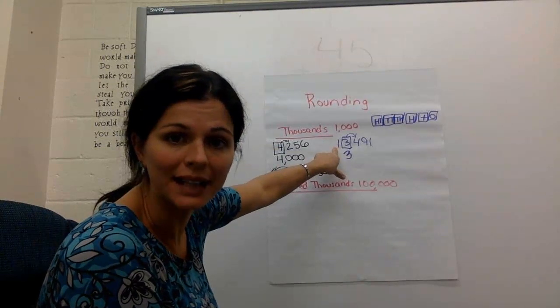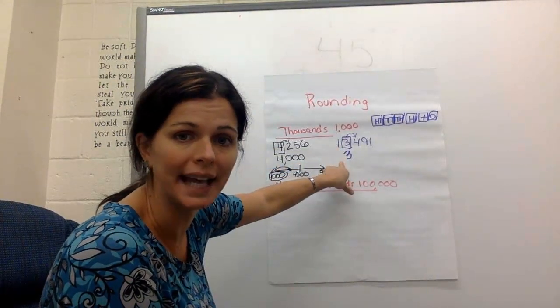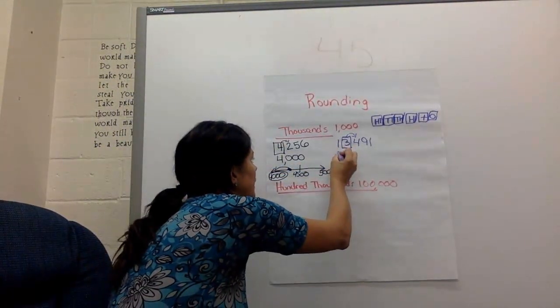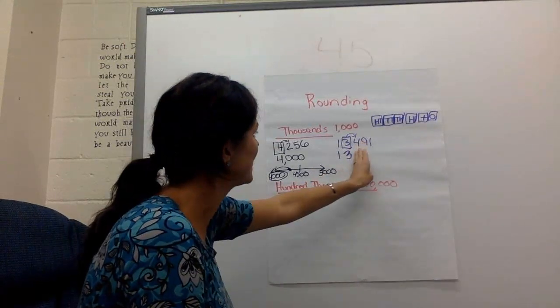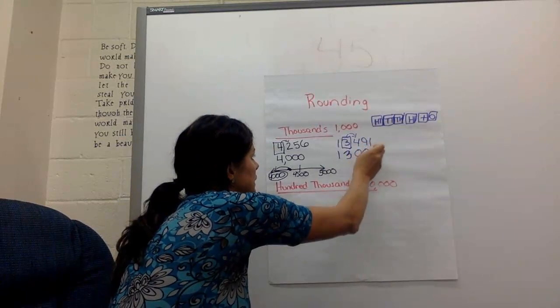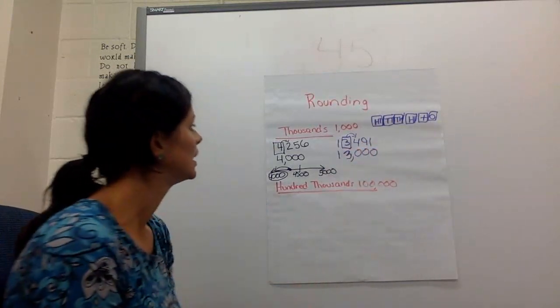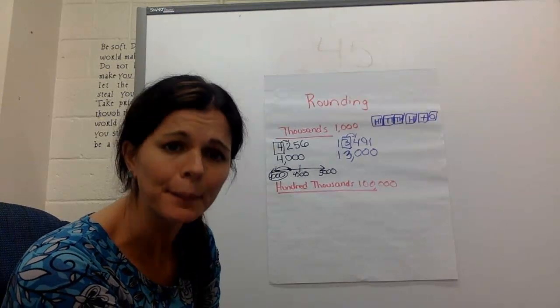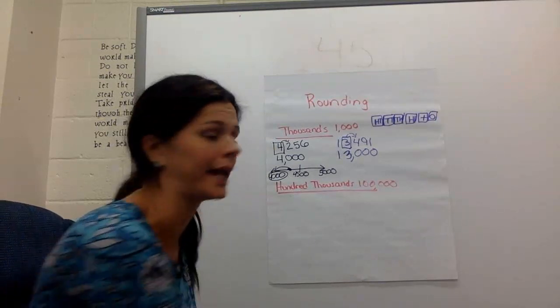Everything up to the box stays the same. So I'm just going to bring that 1 down. We didn't do anything to it. And then everything after the box turns into zeros. And there's my comma. It's rounded to 13,000.